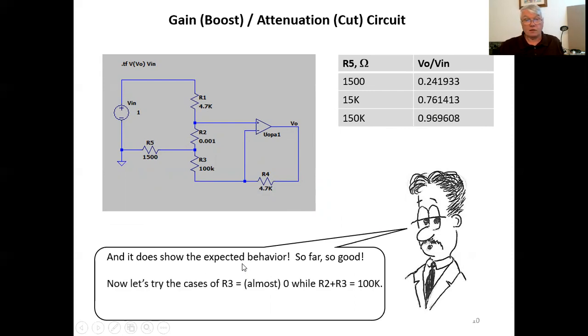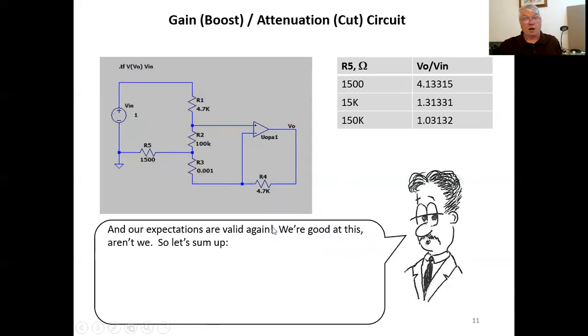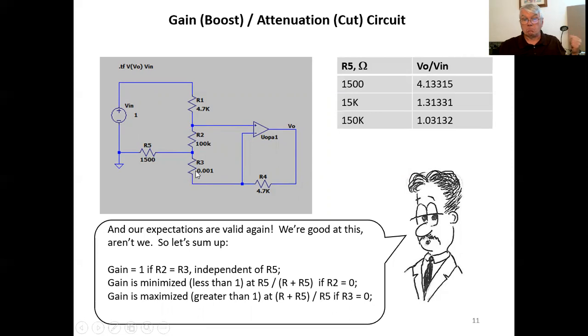Now let's try the case where r three is almost zero, where r two plus r three then total 100k. We expect the voltage gain to be r plus r five over r five, which for r five of 1500 ohms would give us a gain of about 4.13 volts per volt. Let's try it. And there it is. Our expectations are valid again. And notice as r five gets larger, the voltage gain converges towards unity. So let's sum this up. The gain is one if r two equals r three independently of the value of r five. The gain is minimized and will be less than one if r two is zero. And it will be maximized if r three is zero. Okay. And the gain goes to unity as r five goes to infinity, regardless of the values of r two and r three.